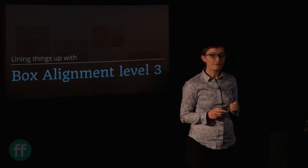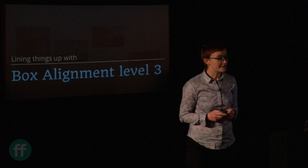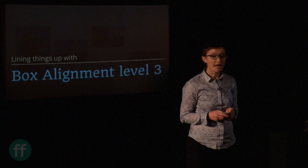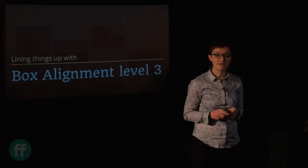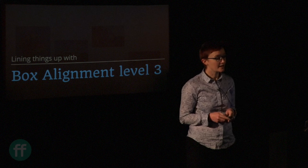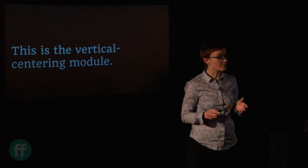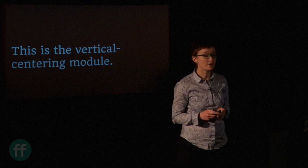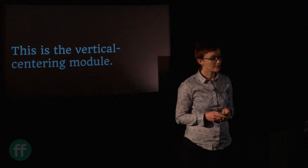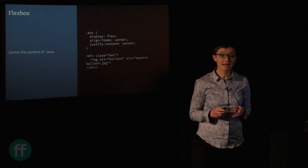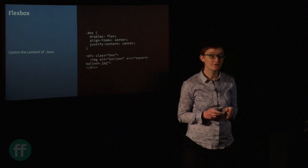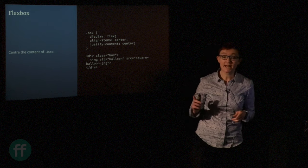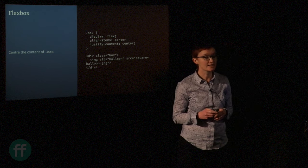I'm going to start with a module that you might not have heard the name of, but you're probably already using. If you're using flexbox, you already know about this — it's Box Alignment Level 3. Vertical centering has been the hardest problem in web design for a long time, and that's been solved by flexbox to some extent. One of the big reasons we use flexbox is just to get alignment, so we don't have to mess around with auto margins. Here we're using align-items and justify-content to center an image vertically and horizontally, and those properties are part of the flexbox spec.